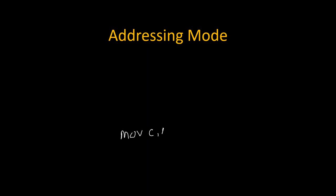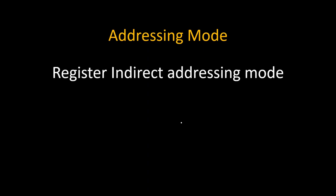Now the addressing mode of this instruction. Addressing mode totally depends on what is the operand in this instruction. The instruction is MOV C comma M — MOV is the opcode and C comma M is the operand. Since the operand is M, that's why its addressing mode will be register indirect addressing mode. Why register indirect? Because data is not getting transferred directly but is provided via a register — we take it from the content of content of HL. That's why it is called register indirect addressing mode.